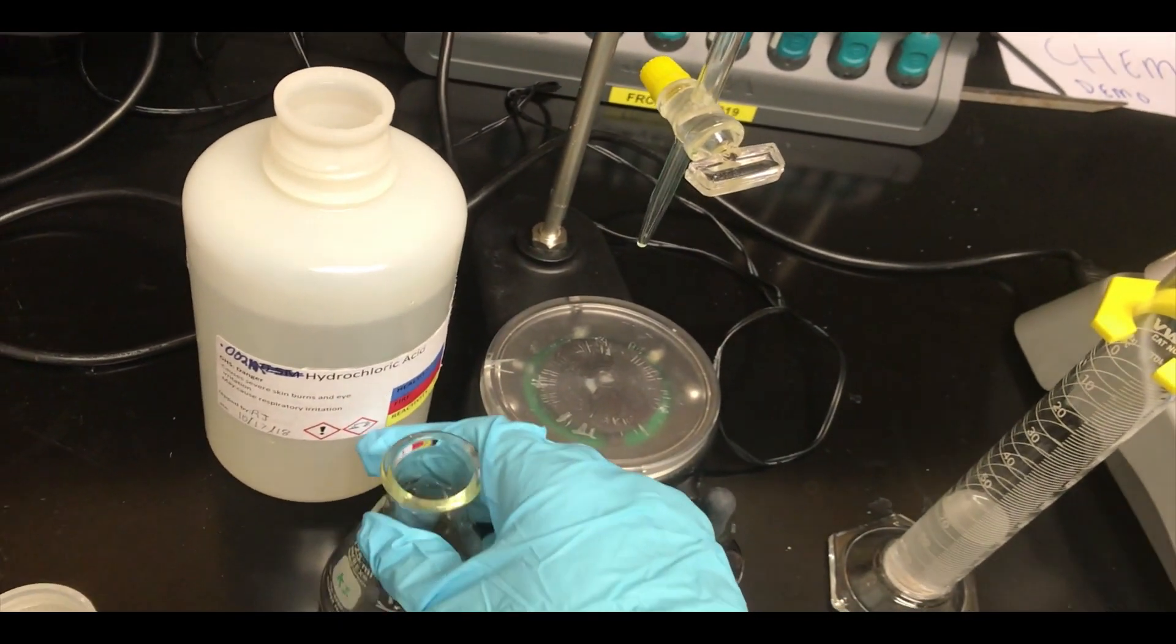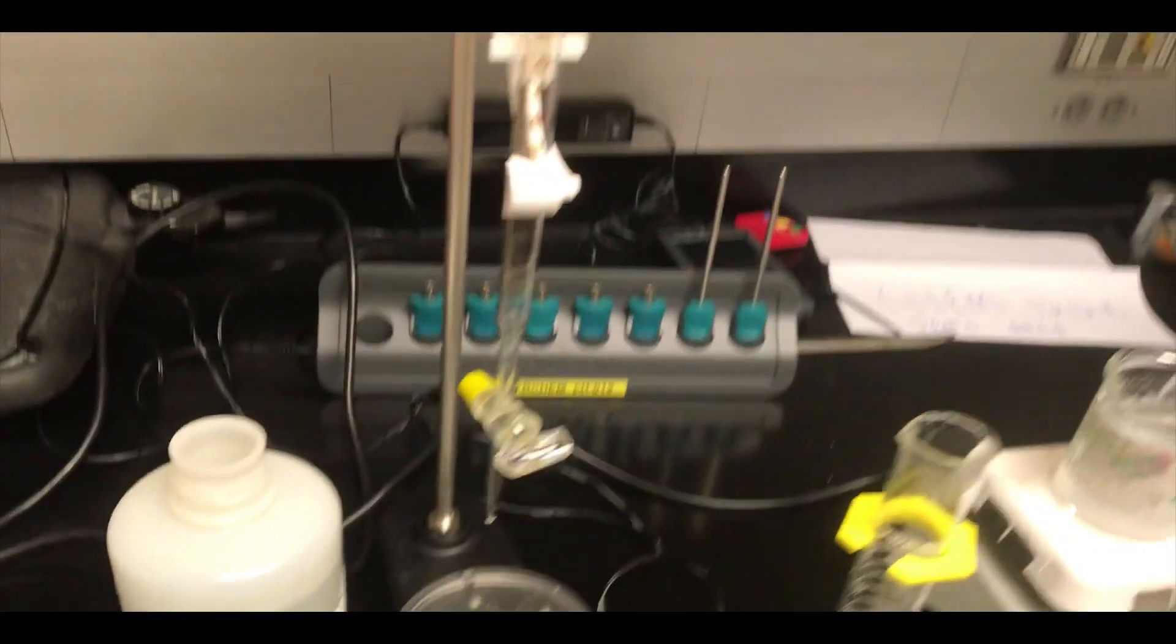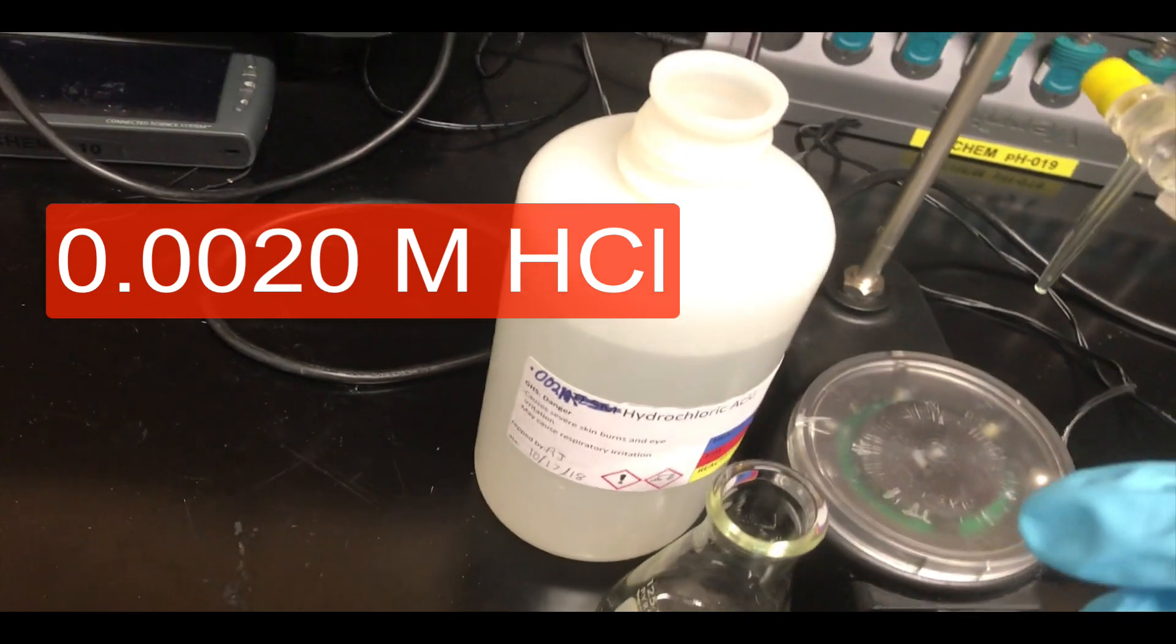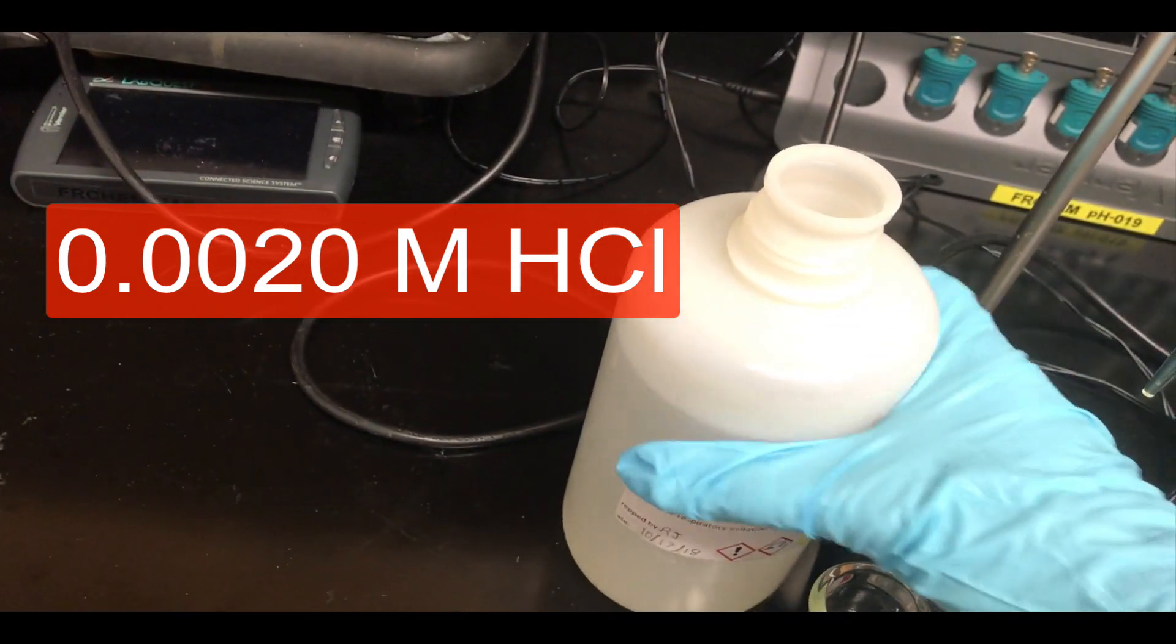So we're going to transfer this into our titration flask, a 125 milliliter Erlenmeyer flask, and then titrate it using hydrochloric acid, 0.002 molar hydrochloric acid. You're actually going to prepare this yourself via dilution. So I'm going to go ahead and fill up the burette, and we'll start the titration.